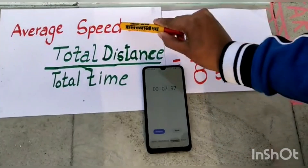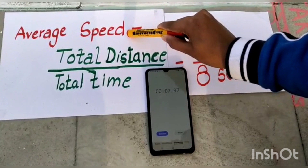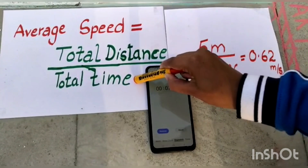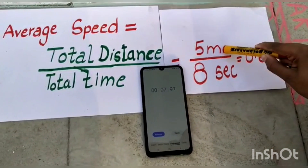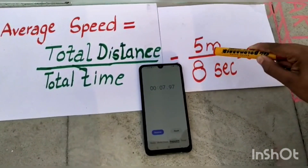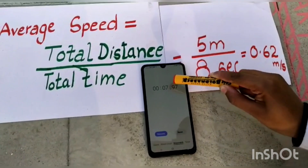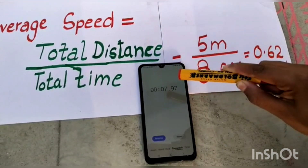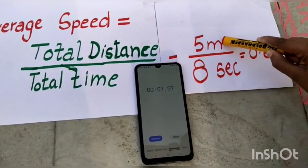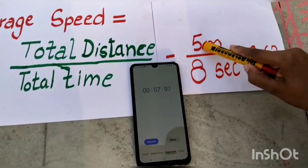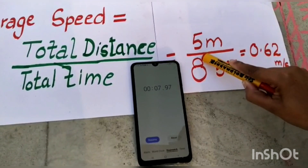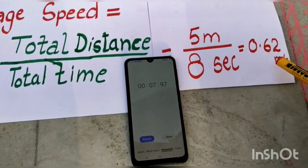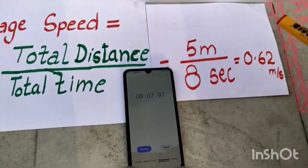The formula of average speed is total distance upon total time. It took my car 7.97 seconds to complete the track which was 5 meters long. So it will be 5 upon 8, which is 0.62 meters per second. Thank you!